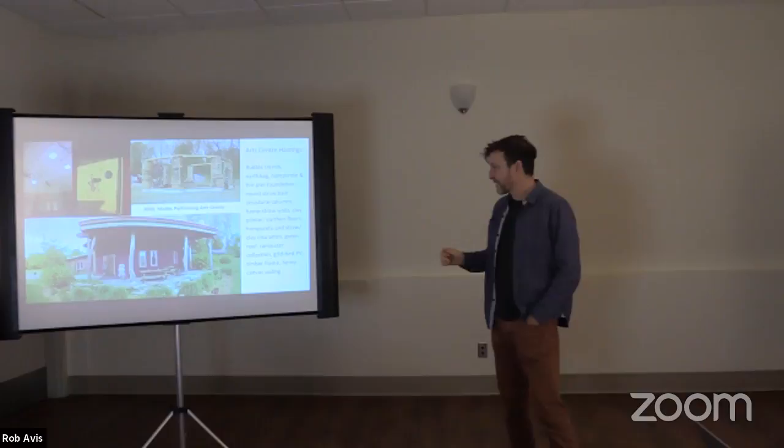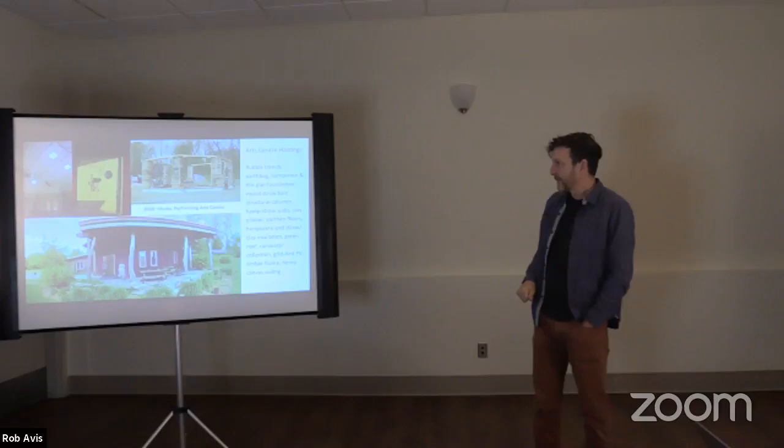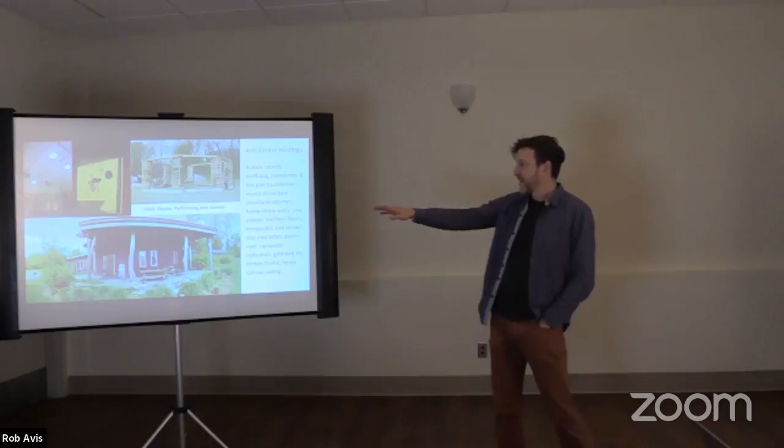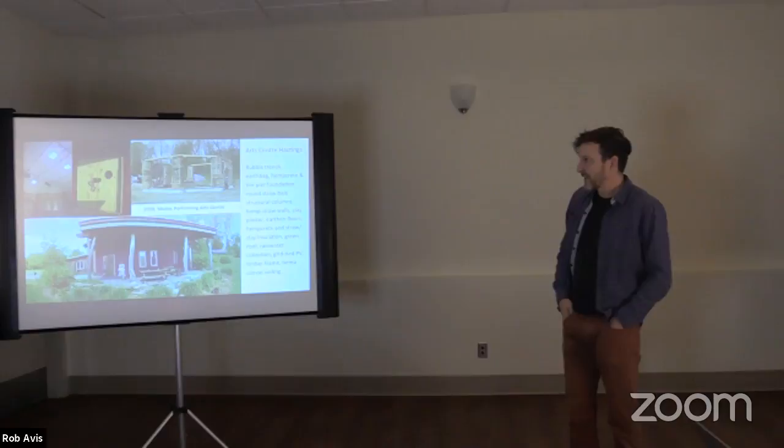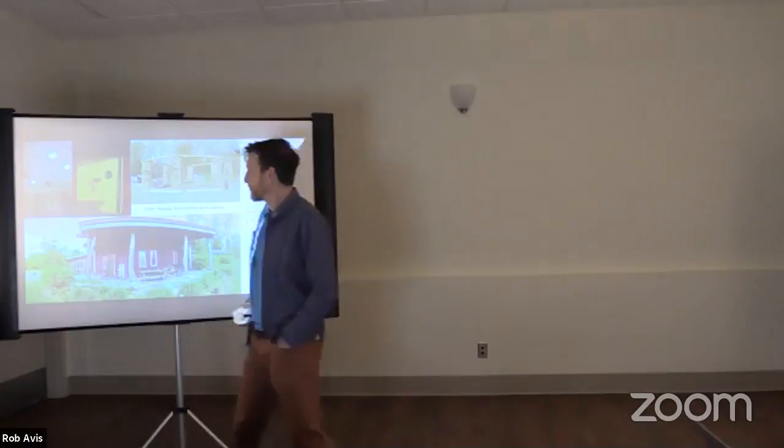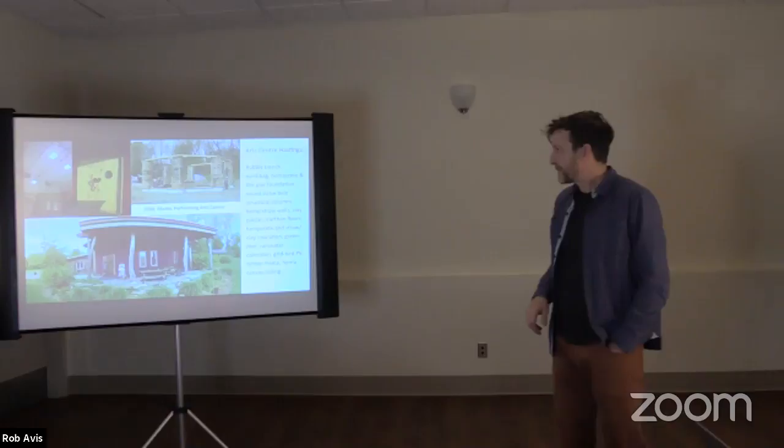It also has a lot of neat stuff. It's got some earthen floors in it, some concrete, some straw clay, green roof over this outdoor stage here. Great solar PV thing. We used a hemp canvas as the ceiling material in the performance space. It's great acoustics. So that was a fun one.